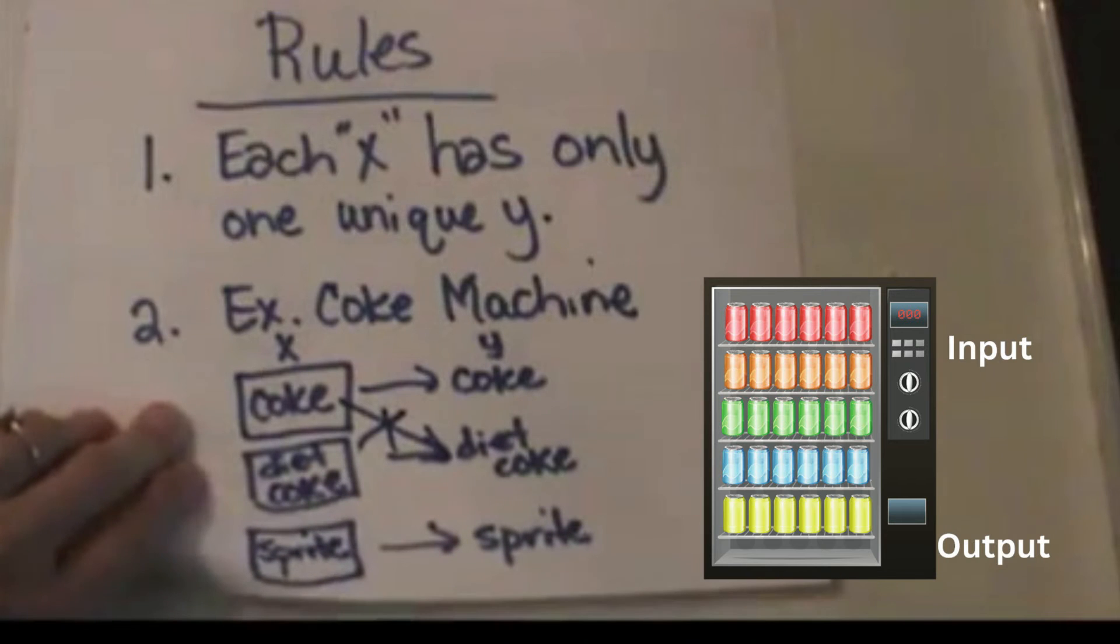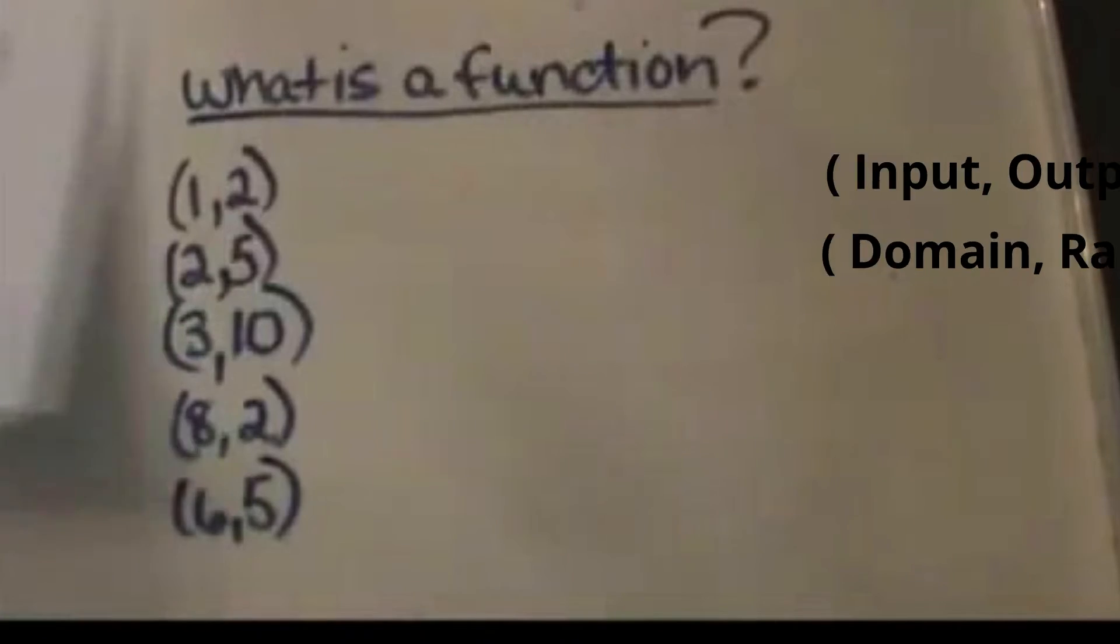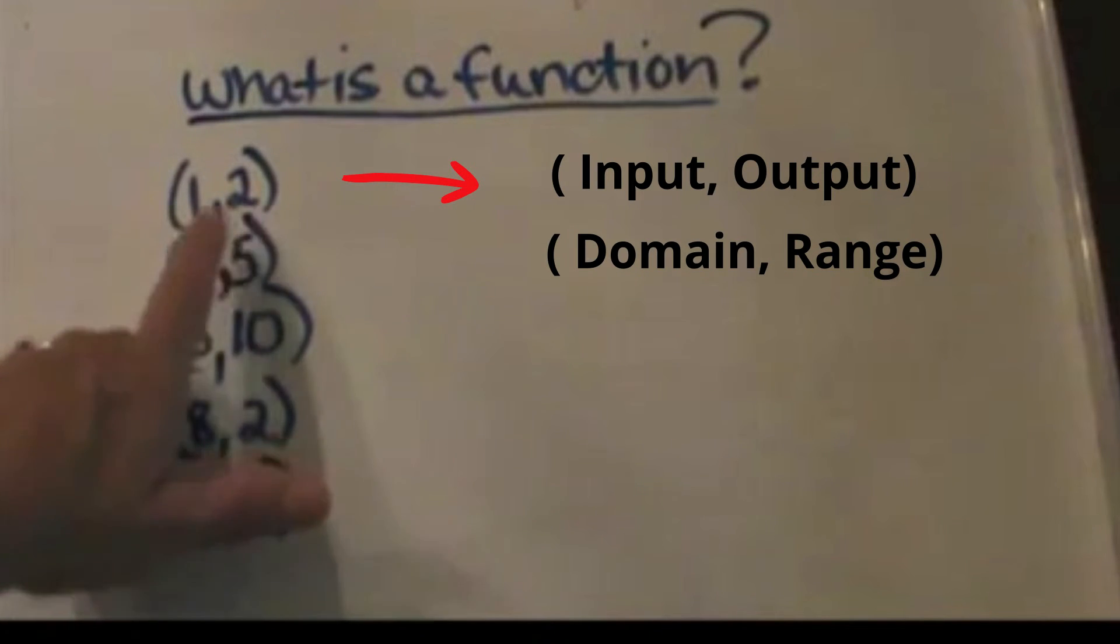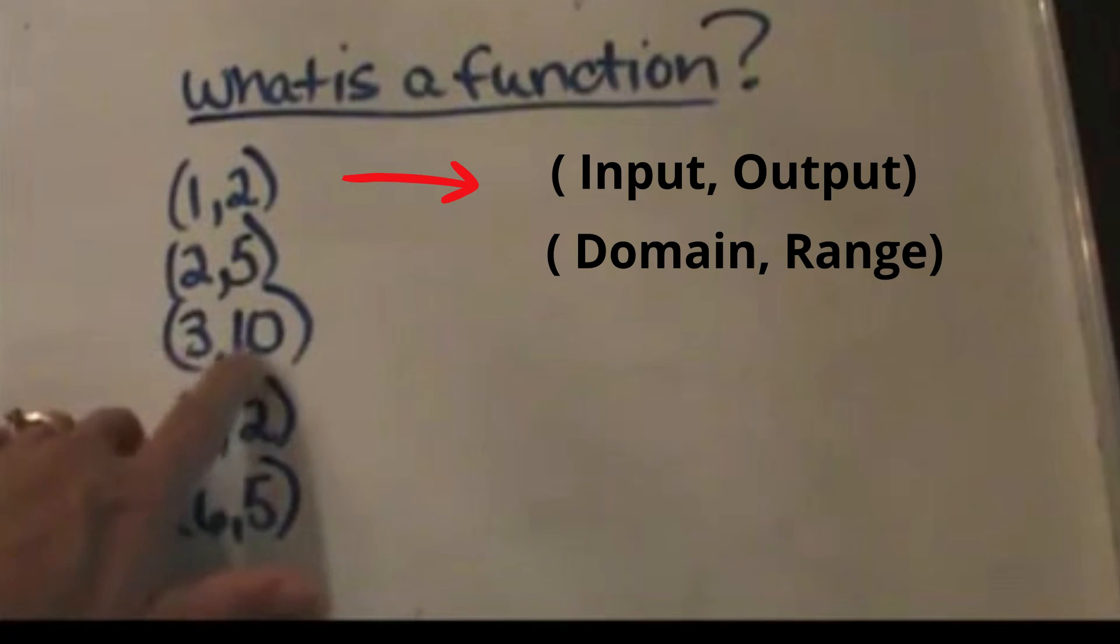Now let's go back and look at it with ordered pairs. We have the x value of 1 and we get an output of 2, so that's a unique output. We push the 2 button, we get out 5. We push the 3 button, get out 10.